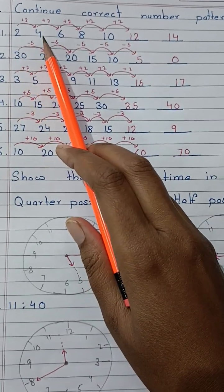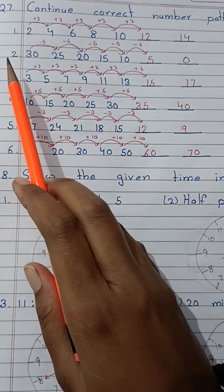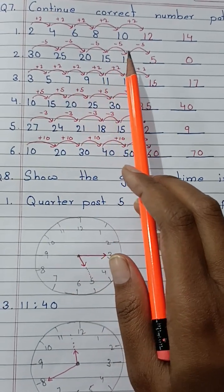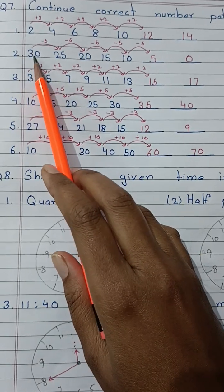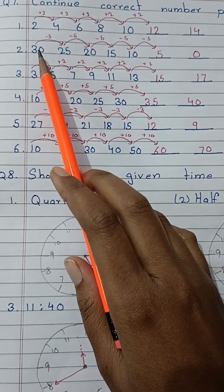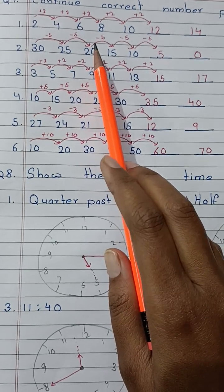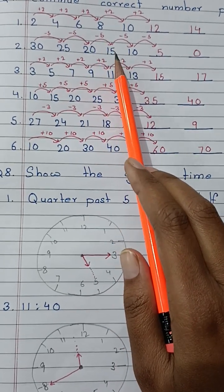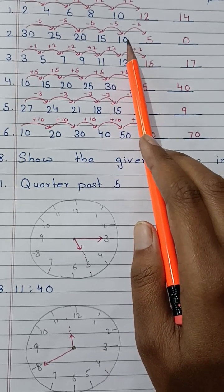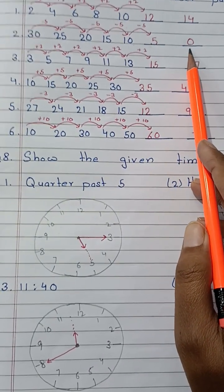So the series will be 2, 4, 6, 8, 10, 12, and 14. Second question: the numbers in the series are 30, 25, 20, 15, 10. As you can see, each number is being deducted by 5 to make the next number. So 30 minus 5 is 25, 25 minus 5 is 20, 20 minus 5 is 15, 15 minus 5 is 10. The next number in the series will be 10 minus 5 is equal to 5, and last, 5 minus 5 is equal to 0.